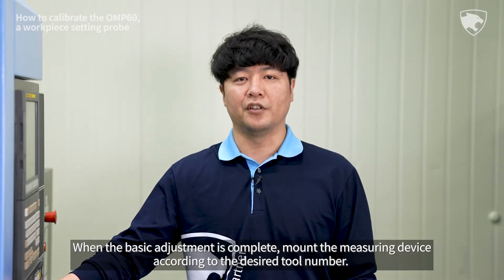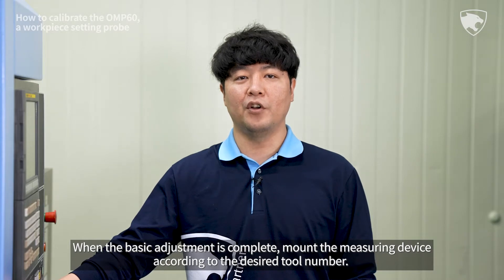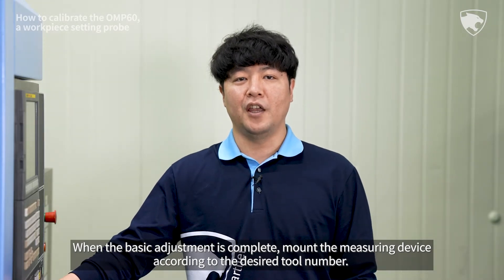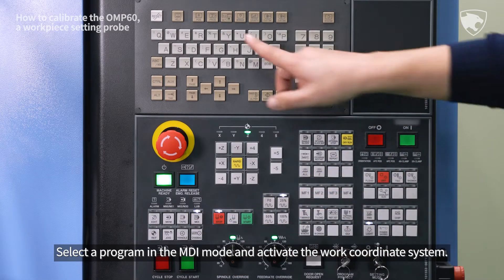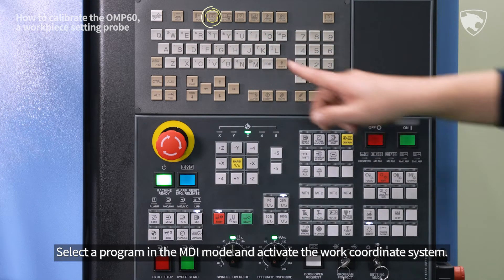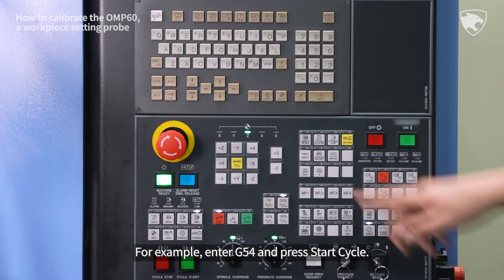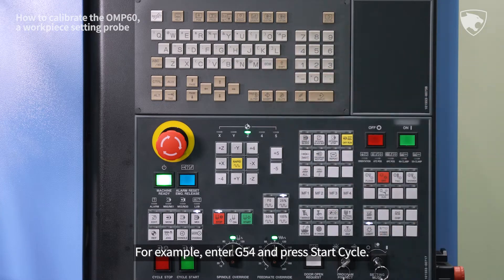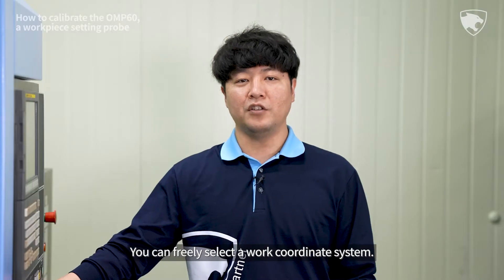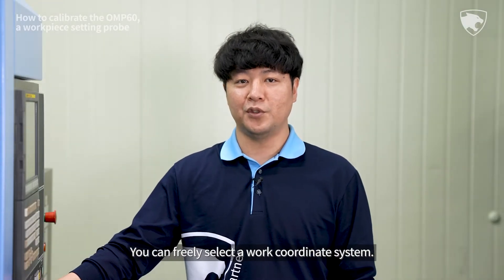When the basic adjustment is complete, mount the measuring device according to the desired tool number. Select a program in the MDI mode and activate the work coordinate system. For example, enter G54 and press Start Cycle. You can freely select a work coordinate system.